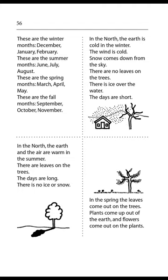In the north, the earth is cold in the winter. The wind is cold. Snow comes down from the sky. There are no leaves on the trees. There is ice over the water. The days are short. In the north, the earth and the air are warm in the summer. There are leaves on the trees. The days are long. There is no ice or snow.